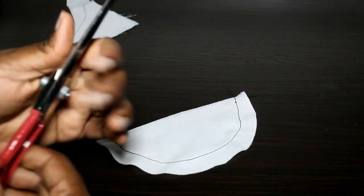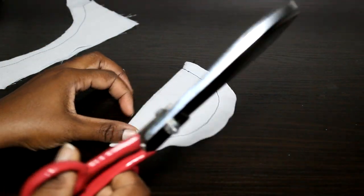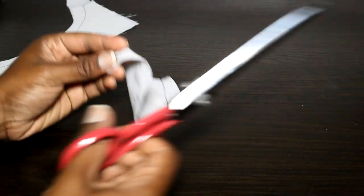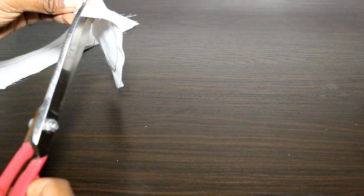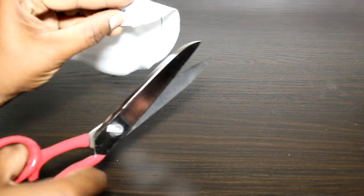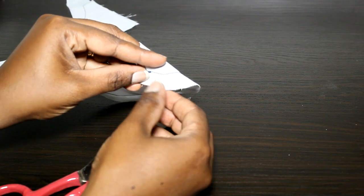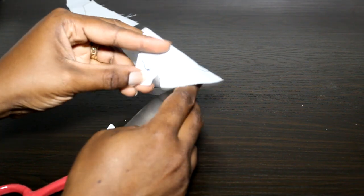So what you do is clip the curves and make notches. One way to make a notch is to just cut a triangular shape like that, and that's a notch.